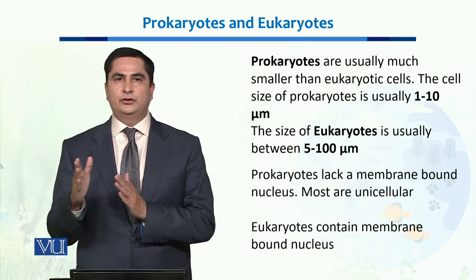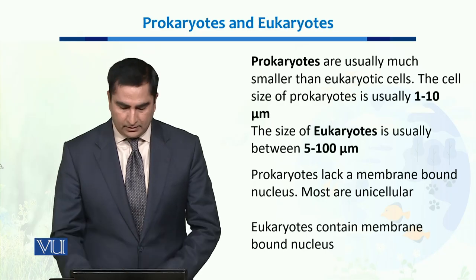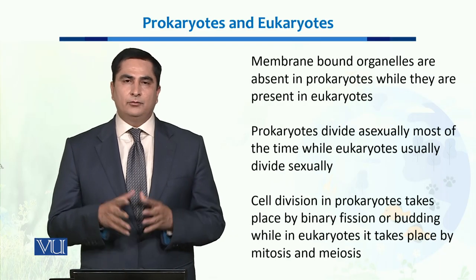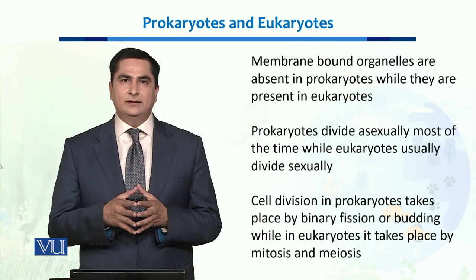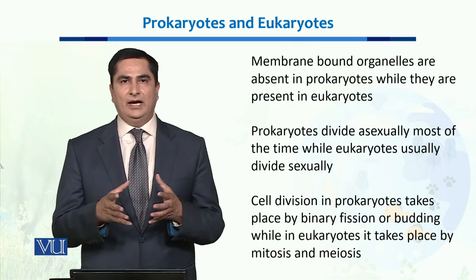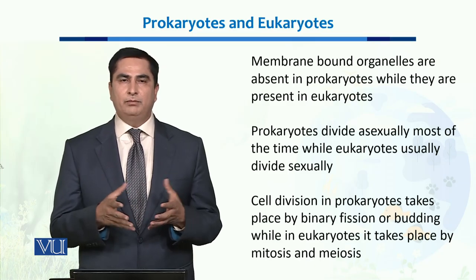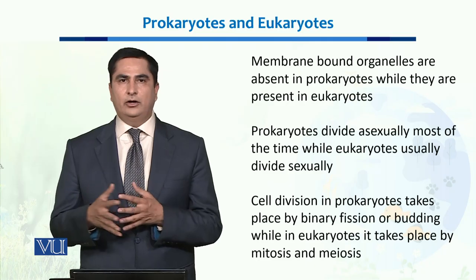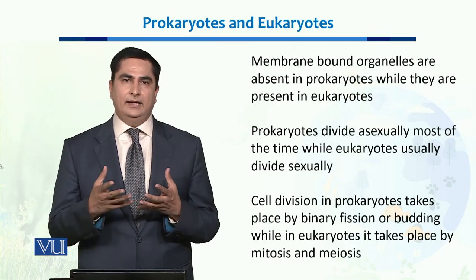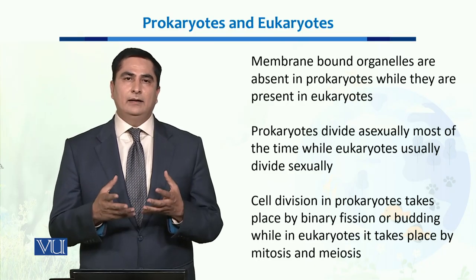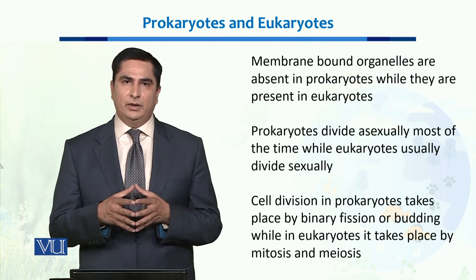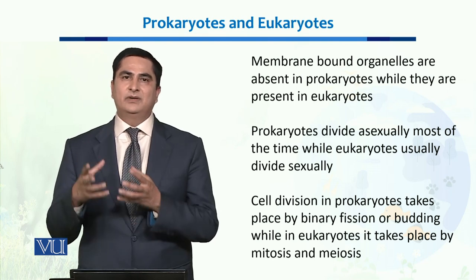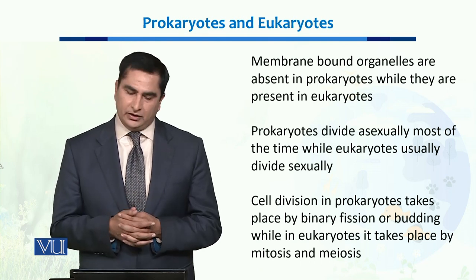Eukaryotes range from unicellular to complex multicellular organisms. Prokaryotes are very small cells and don't have any membrane-bounded organelles, while eukaryotes are big cells and have many different types of membrane-bounded organelles which perform specific functions.